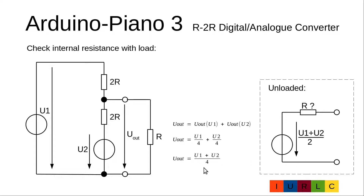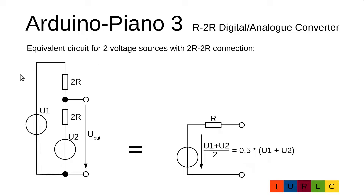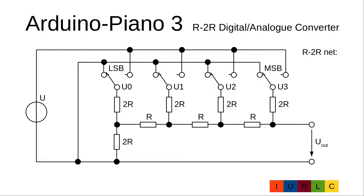We see that the output voltage with the load is exactly half of the unloaded output voltage. Therefore, the assumption that the internal resistance is R is confirmed. So we can replace a circuit of two voltage sources U1 and U2 linked via two 2R resistors, with an equivalent circuit of one voltage source with voltage (U1 plus U2) divided by 2, or 0.5 times (U1 plus U2), and an internal resistance of R.